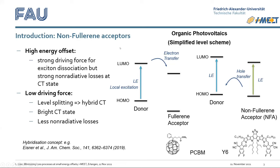As a brief recap: organic photovoltaics have a neutral exciton as the primary photo-excitation, which is a bound electron-hole pair. You need an electron acceptor to form free charge carriers, which proceeds via a charge transfer state. Historically, strong electron acceptors were used, but these produce a charge transfer state with relatively low energy, which couples strongly to the ground state in a non-radiative fashion, giving a lot of non-radiative decay and therefore VOC losses.